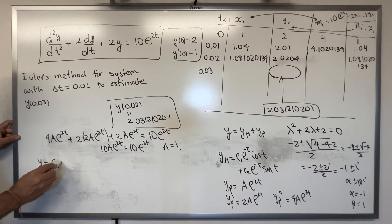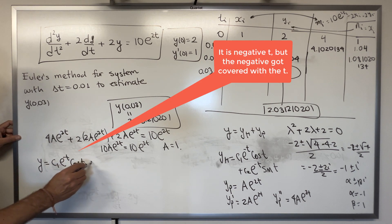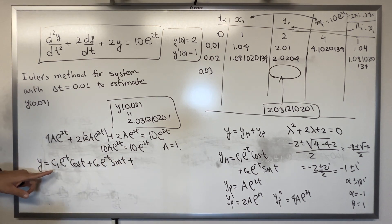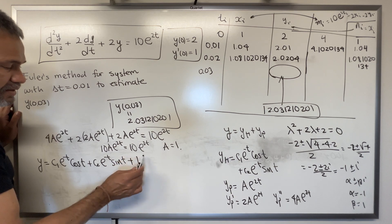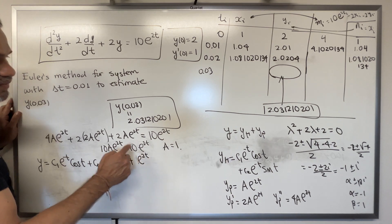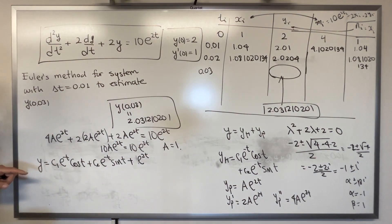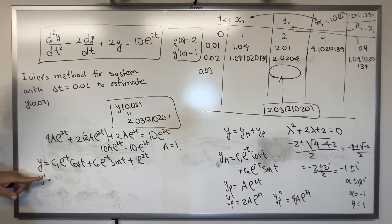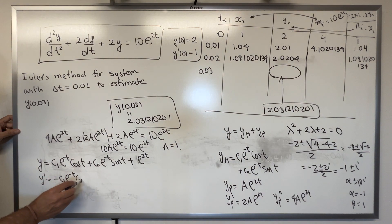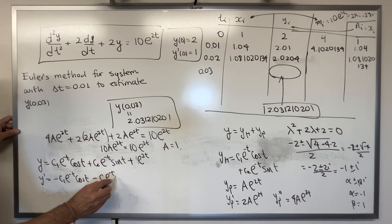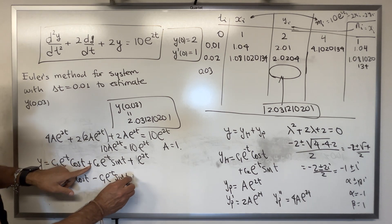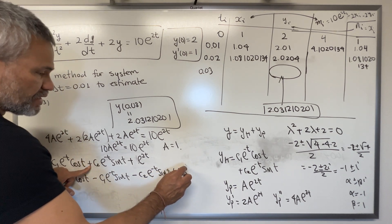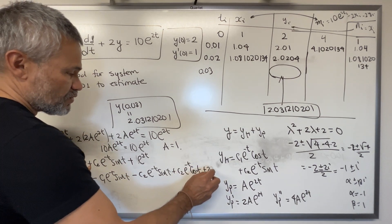The general solution is y = c₁e^(−t)cos(t) + c₂e^(−t)sin(t) + e^(2t). To find c₁ and c₂, we compute y′: y′ = −c₁e^(−t)cos(t) − c₁e^(−t)sin(t) − c₂e^(−t)cos(t) + c₂e^(−t)... plus 2e^(2t).